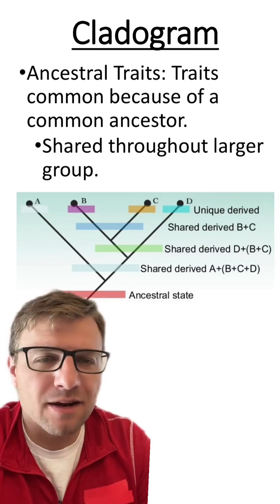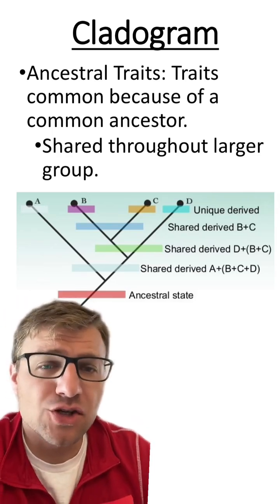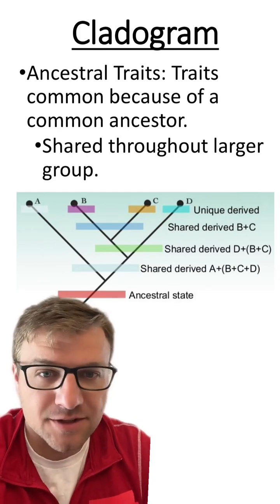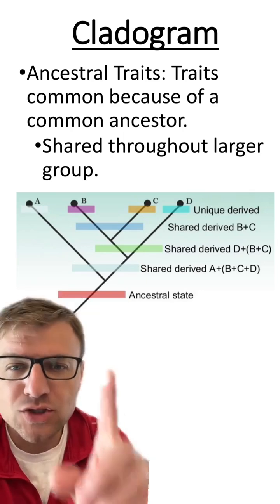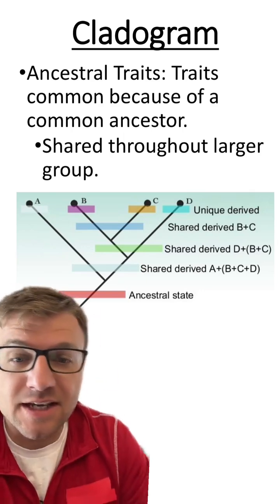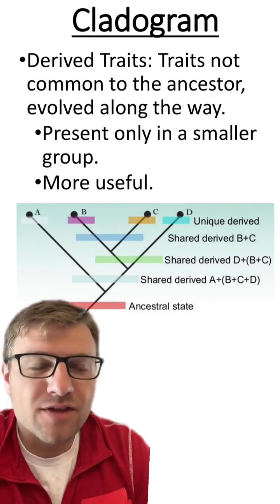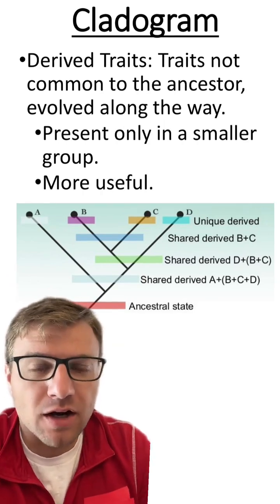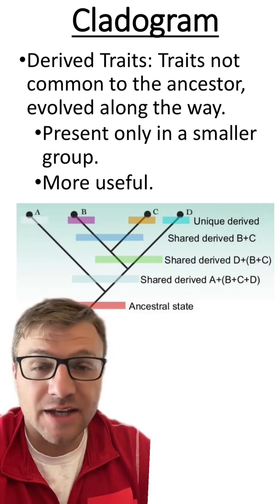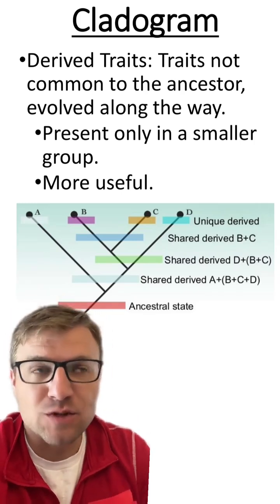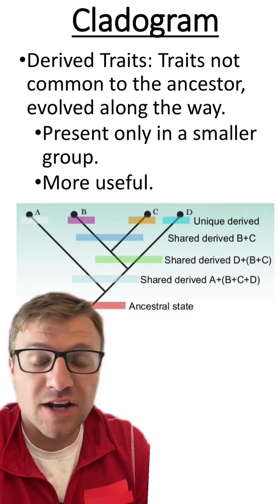Now, when we talk about cladograms, we have two different types of traits. Ancestral traits are traits that are common because of a common ancestor, and they're usually shared between the larger group — so all of the organisms A, B, C, and D are going to have this ancestral trait. However, the more useful traits are called derived traits. These are traits that are not common due to a common ancestor, which means they evolved along the way, and they're just more useful to differentiate species.